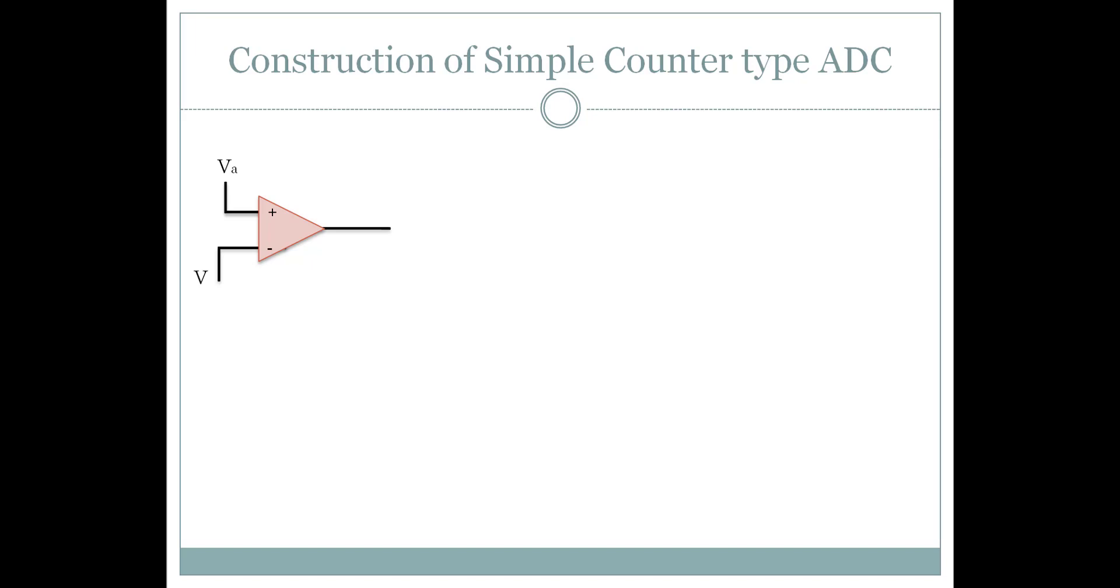The output of the comparator is fed to an AND gate, ANDing the clock pulse and the comparator output. The clock pulse is a simple square wave of a very high frequency, usually of the sampling frequencies. Its time period is denoted by T clock.